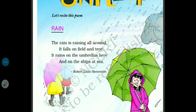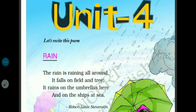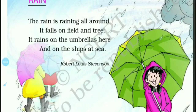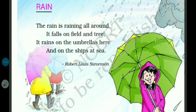Now we will look at the meaning in Hindi. The rain is raining all around. It falls on field and tree. It rains on the umbrellas here and on the ships at sea.